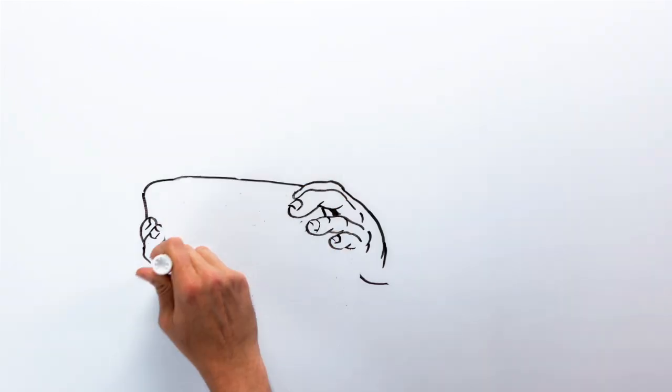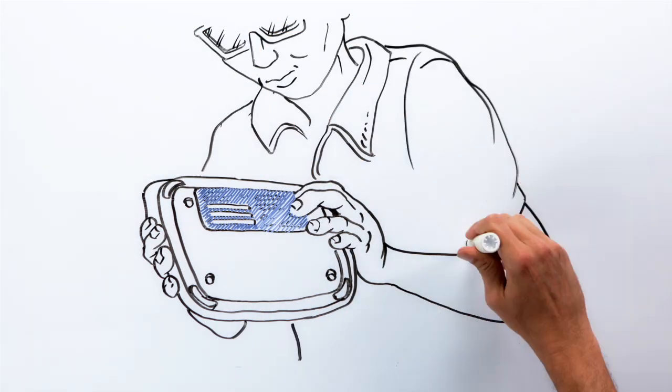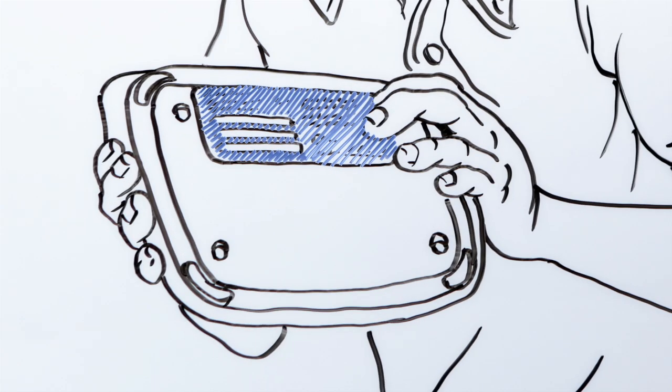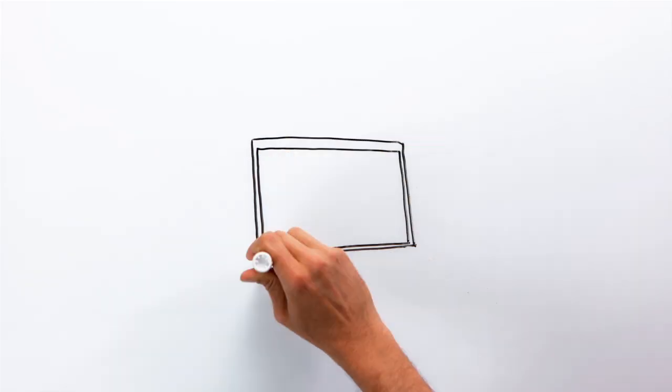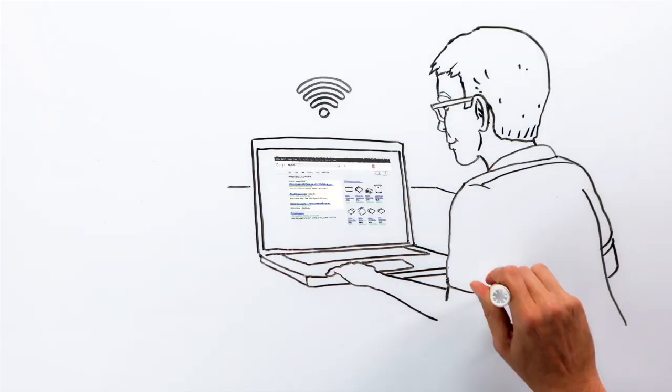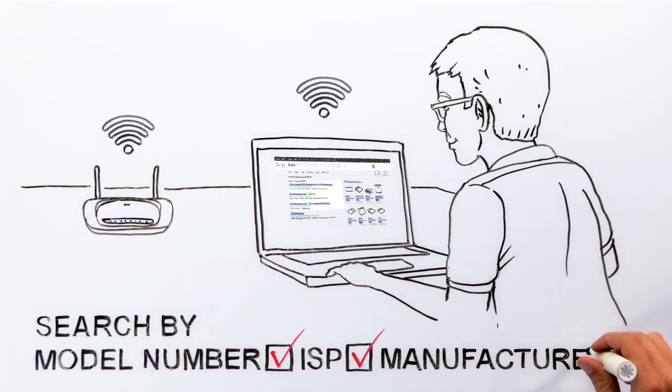For help securing your wireless network and router, just search for the model number of your base station or router. In many cases, the info is available online. Otherwise, contact your internet service provider or the company that manufactured the router for instructions.